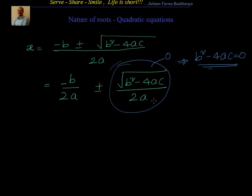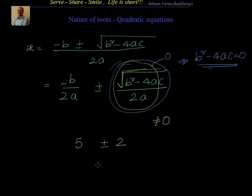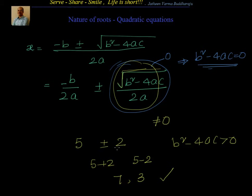Now suppose √(b² − 4ac) / 2a is not equal to 0 — it is some non-zero value. Then both roots will be different; for example, like 5 ± 2 gives 7 and 3. So the roots are real and distinct when b² − 4ac > 0. There is another case where b² − 4ac < 0. In that case we don't have the square root of a negative number as a real value, so we say the roots are imaginary, not existing in the real domain.